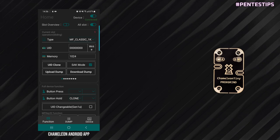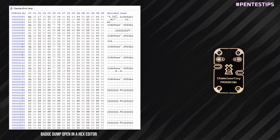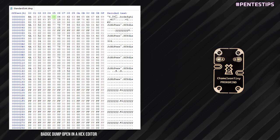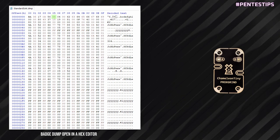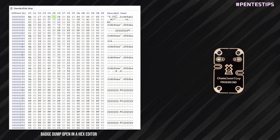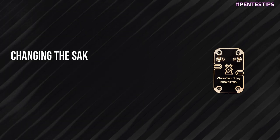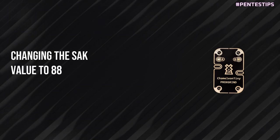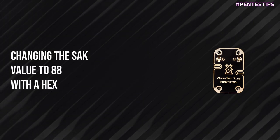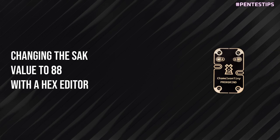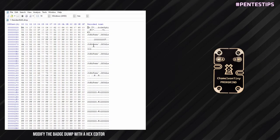In this MIFARE Classic 1K dump, we see that Byte 0x5 has a value of 0x08, the default value of a MIFARE card. If we want to change the SAK value to 0x88 — a commonly used value in Chinese access control products — we modify this byte to 0x88.